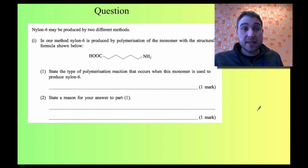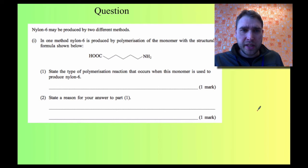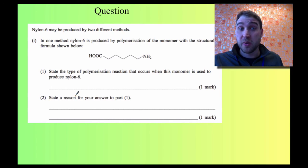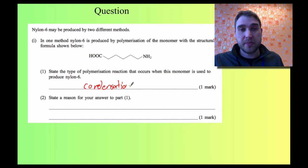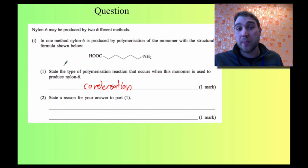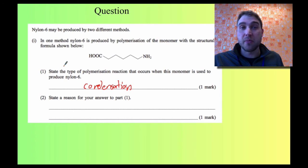The next question says: in one method, N6 is produced by the polymerization of this monomer. State the type of polymerization. Again, we've got a carboxylic acid on one end and an amino group on the other end. So when they join together, you're going to get water coming out — that's condensation. The reason: you've got a carboxylic acid reacting with an amino group to produce an amide group. When that happens, a water molecule is emitted, so a small molecule is emitted when the monomers join together — that makes it a condensation reaction.